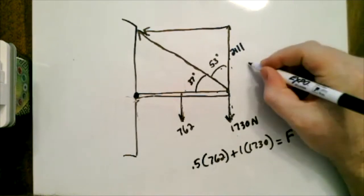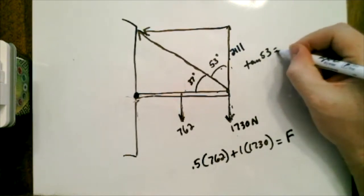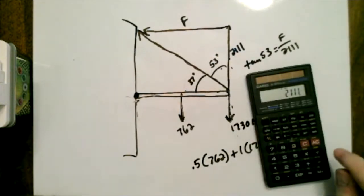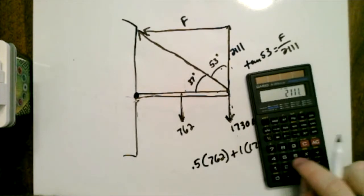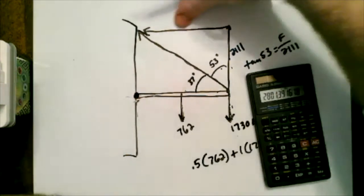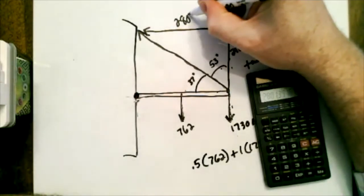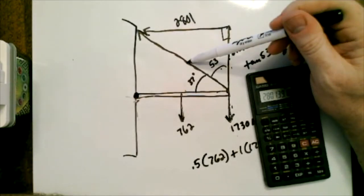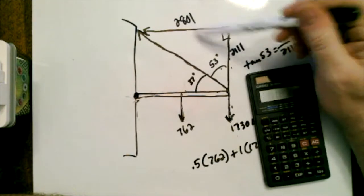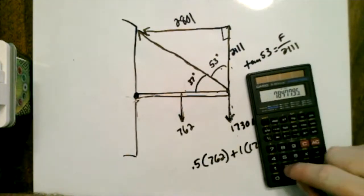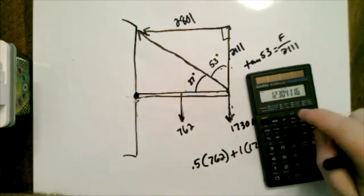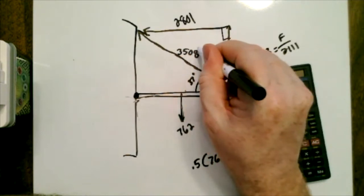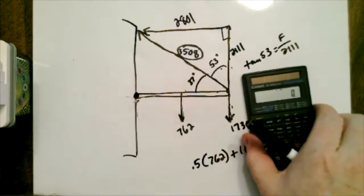Opposite over adjacent is tangent. So I can do tangent of 53 would equal F over 2111. So I'm going to take 2111 times tangent 53, and this up here is going to be 2801. And once you have both of these sides in this right triangle, you can easily get the chain force, which is the first thing we're always trying to figure out. I can use Pythagorean theorem here. So I'm going to square that plus 2111 squared square root, and I get 3508. And you can check that answer on the website. That is the force in the chain.